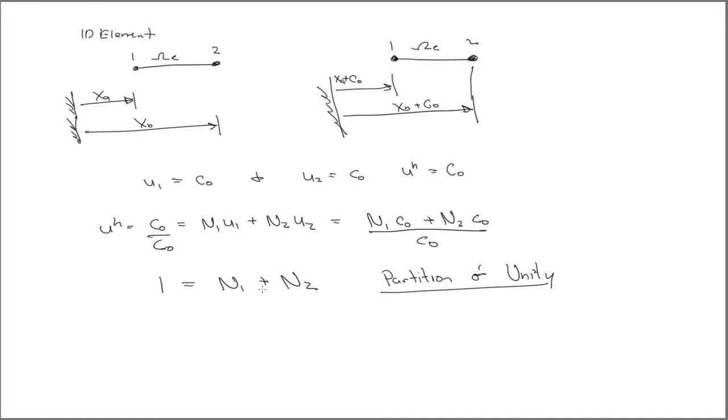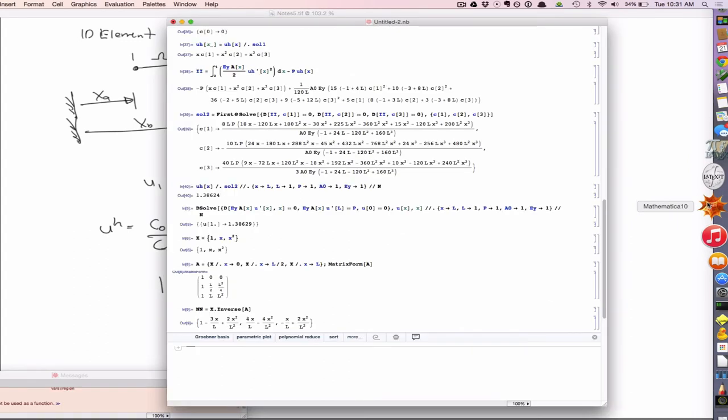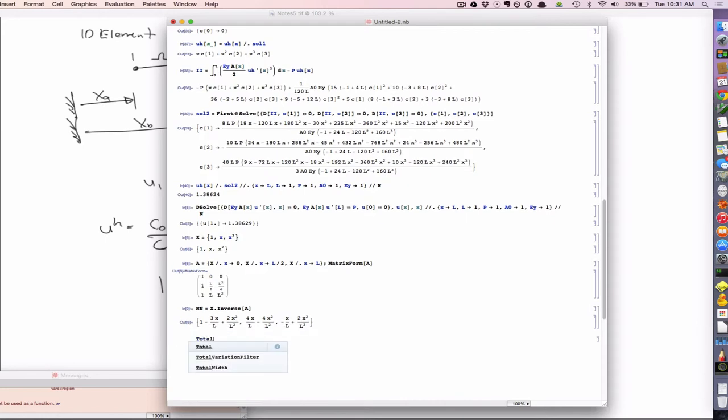This is a property that the shape functions will have, and that we can see that if we go back to the shape functions that we just derived here. If I just add them all up, let's see, the summation of all the shape functions will always add to one.